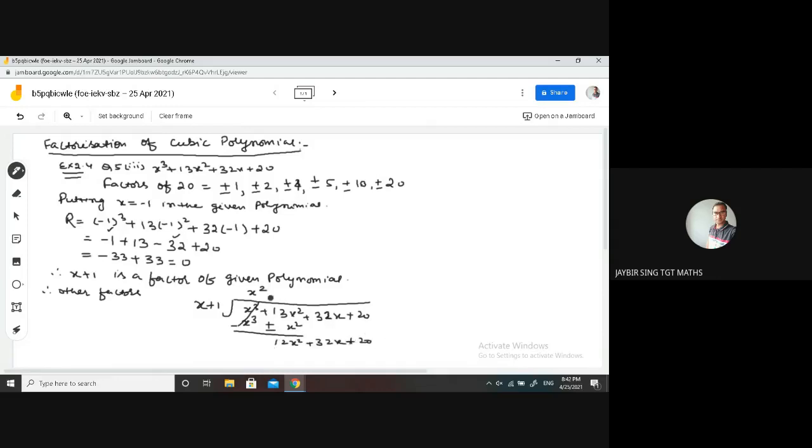So 12x square to get, we multiply by plus 12x. 12x into x, 12x square, and 12x into 1, this is 12x. Now from here, this becomes minus, this becomes minus, so this cancels, and here we get 32x minus 12x, this is 20x plus 20. Now we have 20x plus 20, to get 20x, we multiply by plus 20. 20 into x, 20x plus 20.